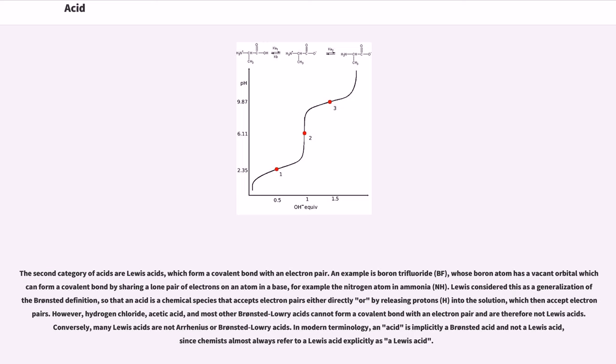The second category of acids are Lewis acids, which form a covalent bond with an electron pair. An example is boron trifluoride (BF3), whose boron atom has a vacant orbital which can form a covalent bond by sharing a lone pair of electrons on an atom in the base, for example the nitrogen atom in ammonia (NH3). Lewis considered this as a generalization of Brønsted definition, so that an acid is a chemical species that accepts electron pairs either directly or by releasing protons (H+) into the solution, which then accept electron pairs.